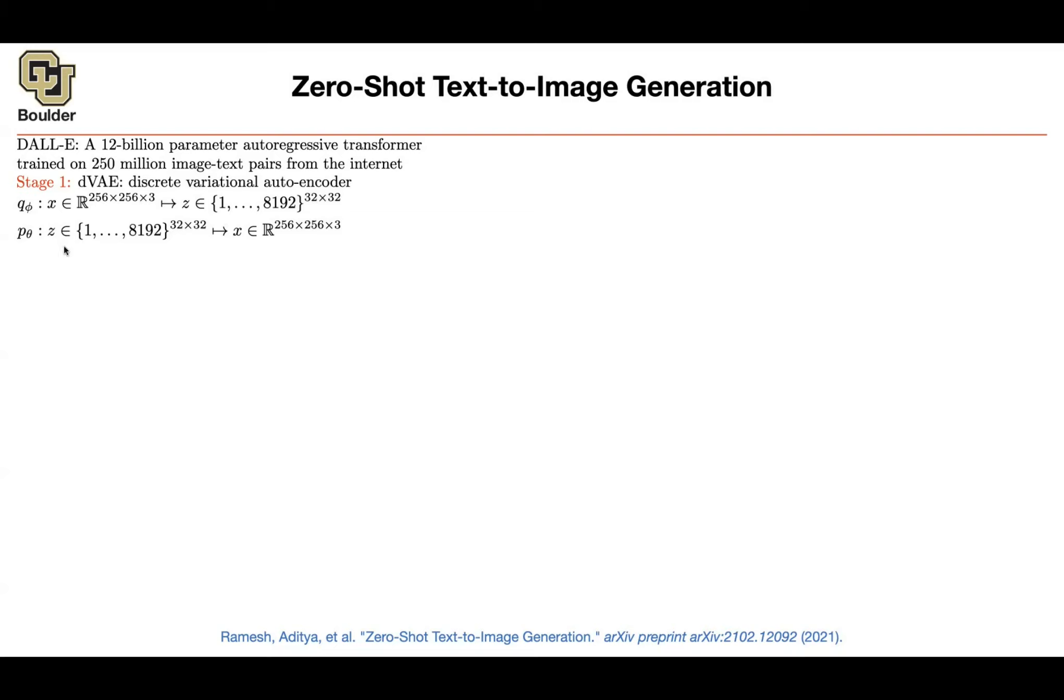That's the encoder. The decoder is going to be your prior. It's going to take you from these integers to the power 32 by 32 to images. And then the way we are going to learn about variational autoencoder, so don't worry about it. This is the variational distribution. This is your prior distribution.